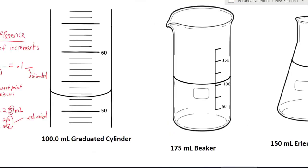So let's move on to our next reading. This one is a hundred point zero milliliter graduated cylinder. So we use the same formula, the difference divided by the number of increments.